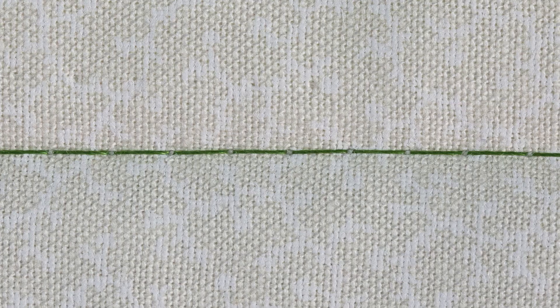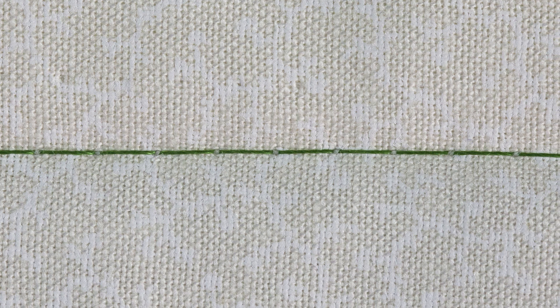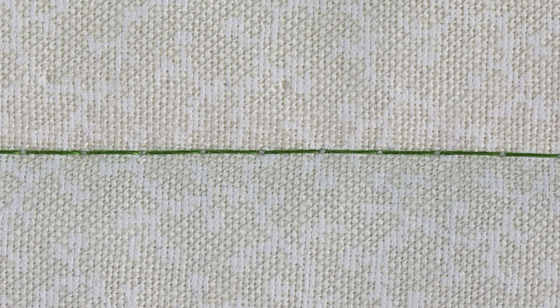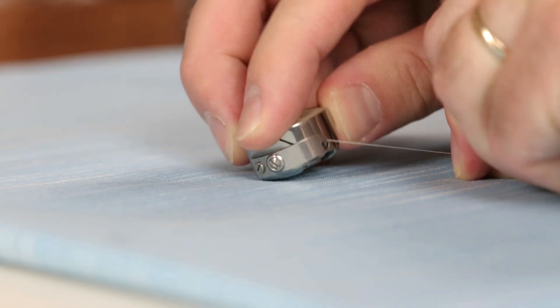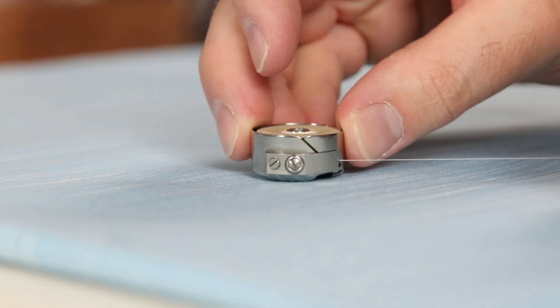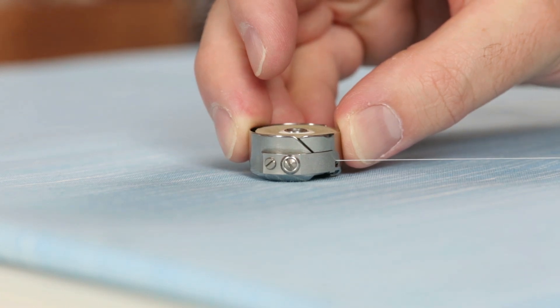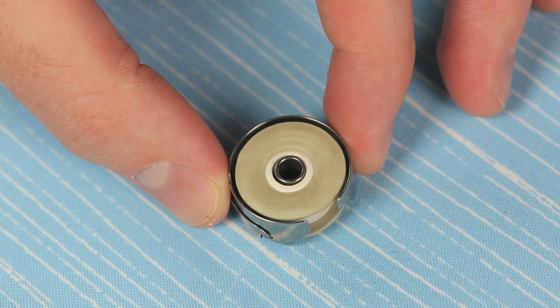When both threads make a loop and meet the fabric, a stitch is formed. Machines that use a metal bobbin case like this one need to have a bobbin inserted into it and threaded as your machine manual states. Most machines will have the bobbin turned counter-clockwise inside the bobbin case.